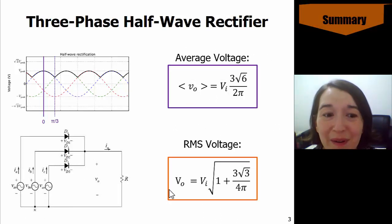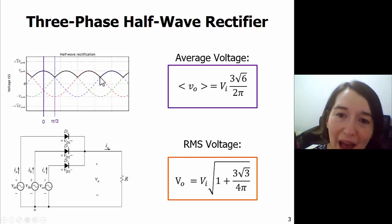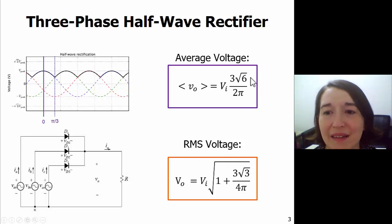Things to remember are that we have the three-phase half-wave rectifier, so this circuit down here gives us this waveform, and the average value is this equation. And remember, VI is the RMS value of the input.